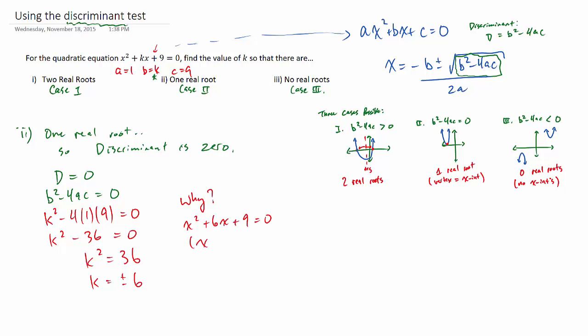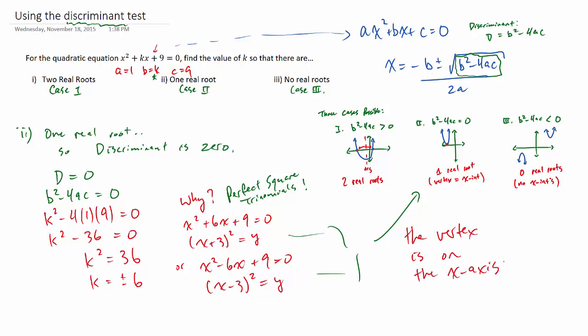And if we ask ourselves, well, why does this work? It's because what we're actually doing is we're creating a perfect square trinomial. What that means is if we were to graph it, our vertex in each of those cases would either be negative three or positive three, which means we'd be right on the x-axis. And so the vertex actually is the x-intercept.